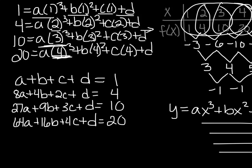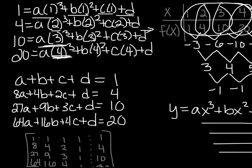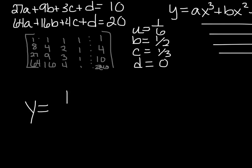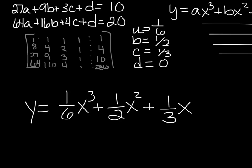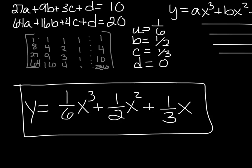Create an augmented matrix out of that, so we'll write it down. We'll use the magic of RREF in our calculator, and it will give us an a of 1/6, a b of 1/2, a c of 1/3, and a d of 0. So I'll take those, let me scoot this up a little bit, write my cubic, and then I'll be done. Y equals, or f(x) equals, 1/6 x cubed plus 1/2 x squared plus 1/3 x plus 0. So there is your cubic function that goes with the data in that table.